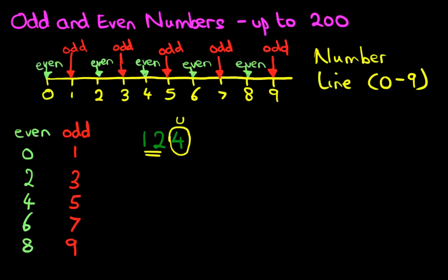That is the 4. And where is 4 on our list — is it an odd number or an even number? Can you find it? That's right, it's over here. 4 is an even number. So 124 is an even number.